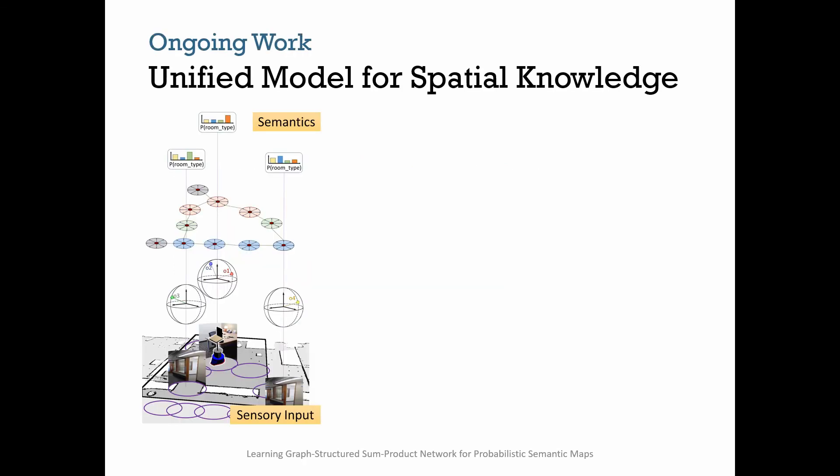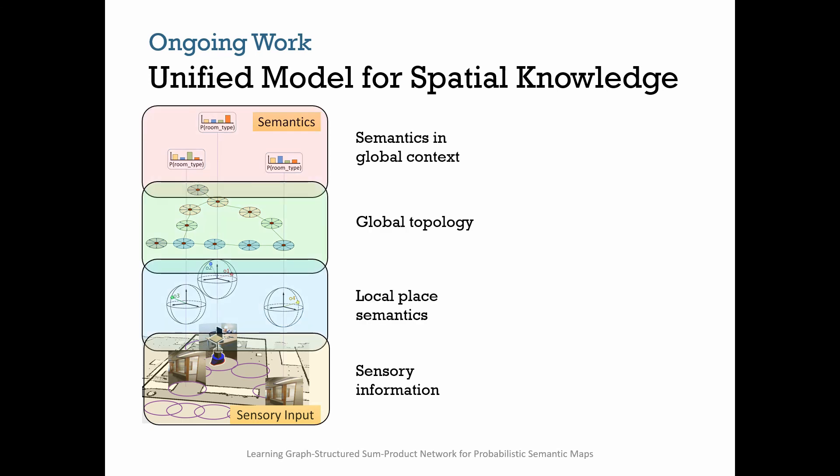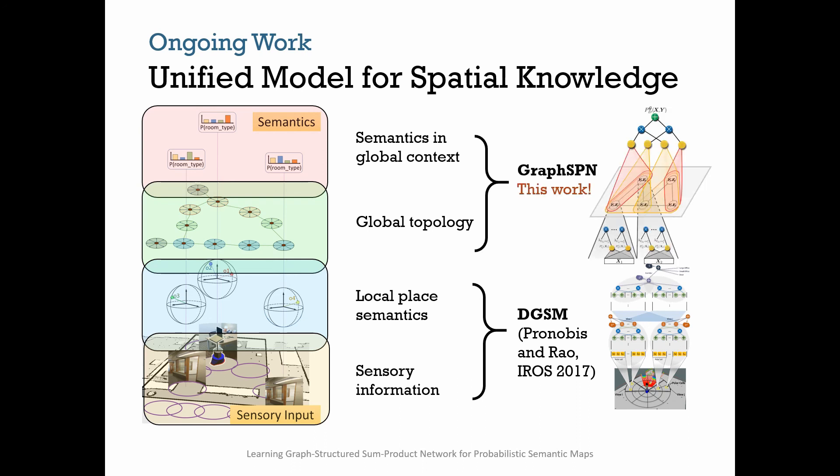Our ongoing work focuses on the integration of two of our recently proposed semantic environment models into a very deep representation from pixels to building structure. The representation consists of several layers, sensor information, local semantics, global topology, and semantics in the global context. For each layer, the general knowledge about the world is modeled using a sub SPN. The bottom layers have been presented in our recent IROS paper. The top layers are learned with Graph SPN, together forming a single very deep unified SPN model.